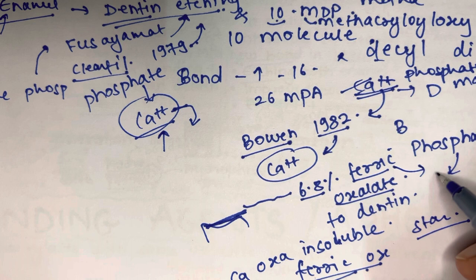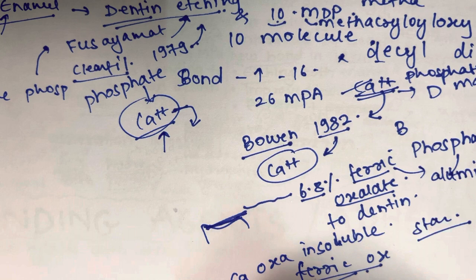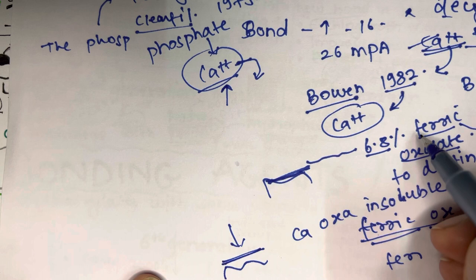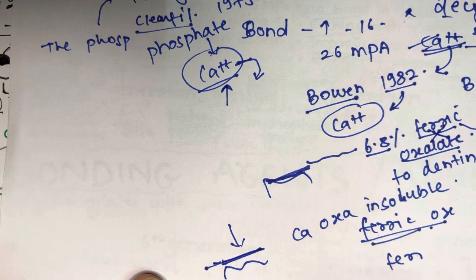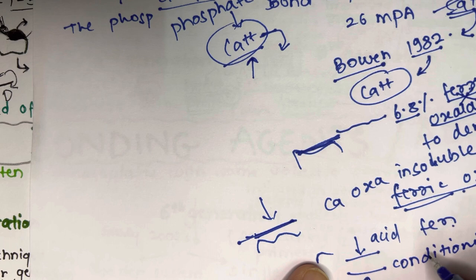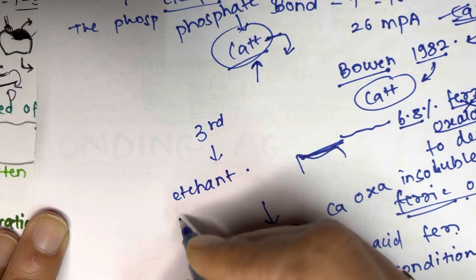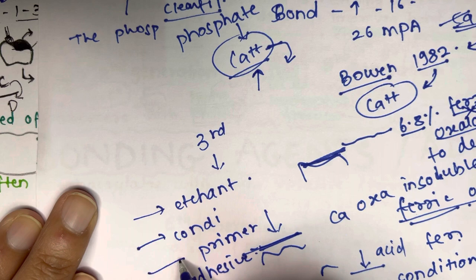When ferric oxalate was applied to dentine, it formed insoluble precipitates of calcium oxalate and ferric phosphate, causing black staining. Because of that, ferric oxalate was replaced with aluminium oxalate. However, this precipitate again interfered with the interaction between the adhesive and the dentine. To overcome this problem, a very strong acid was applied to the enamel surface and a milder conditioner to the dentine. Components of the third generation are: the etchant, conditioner, primer, and adhesive.